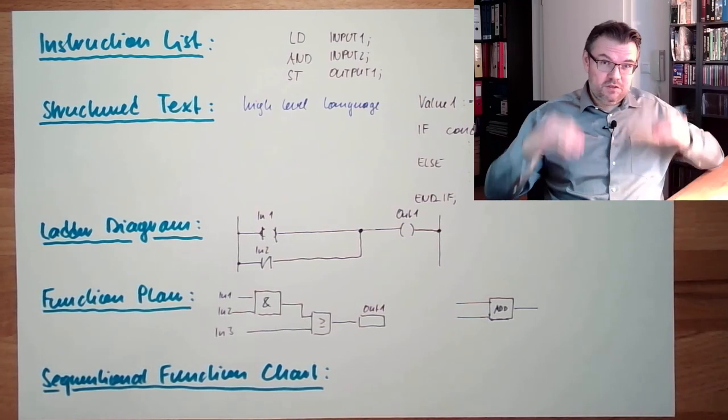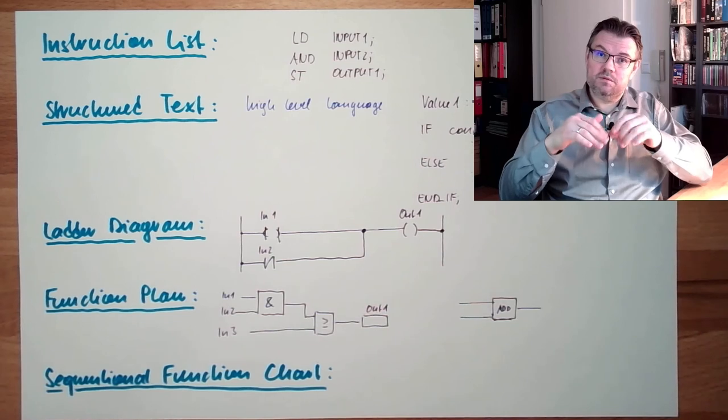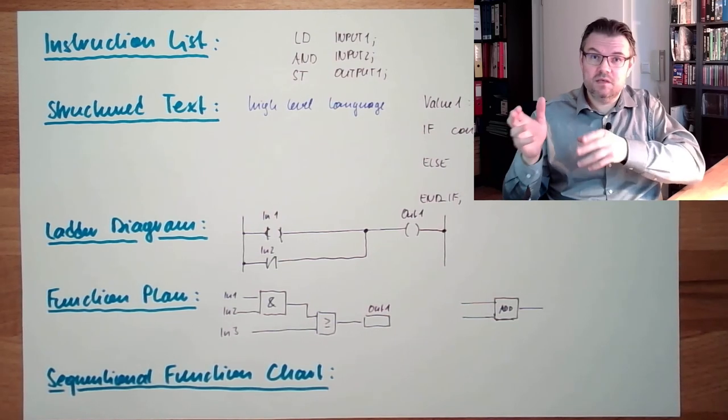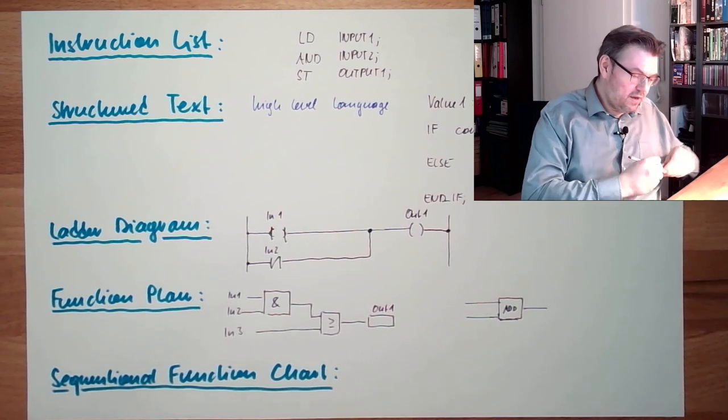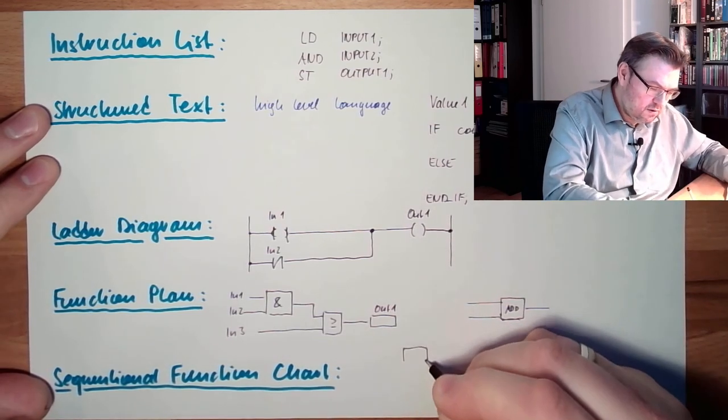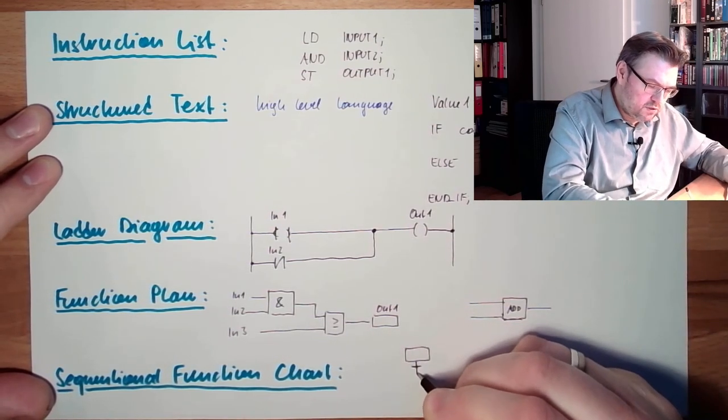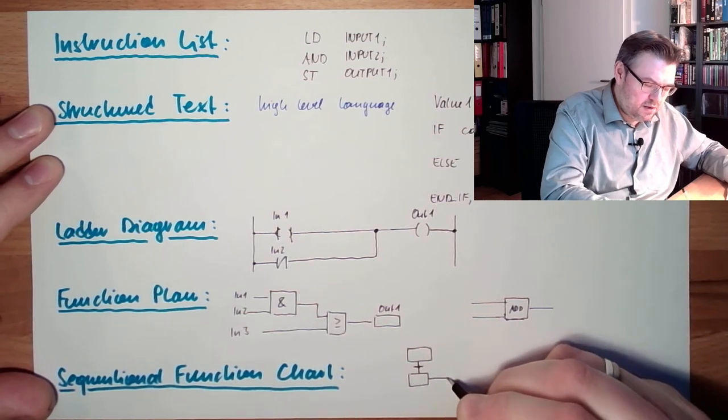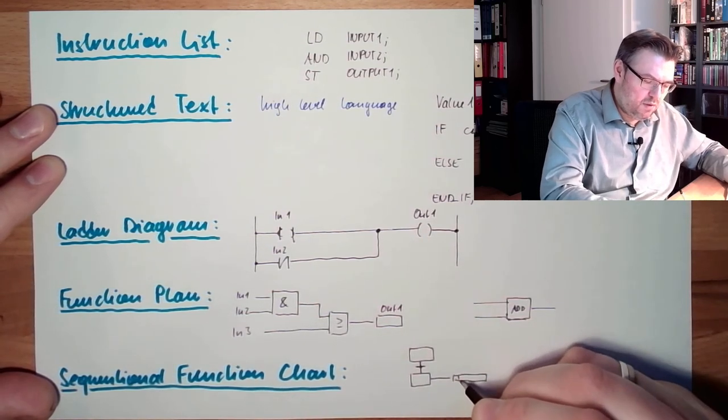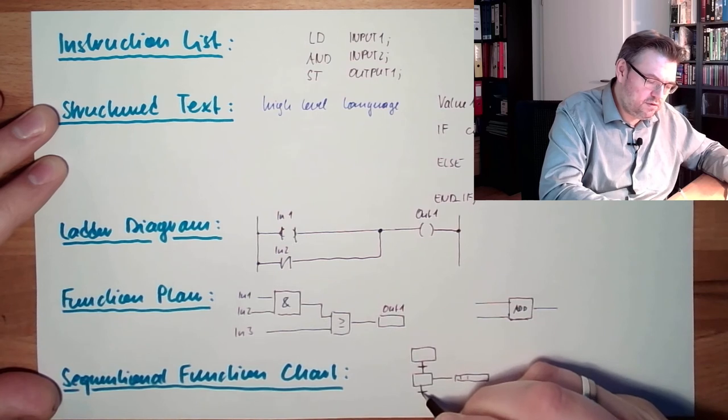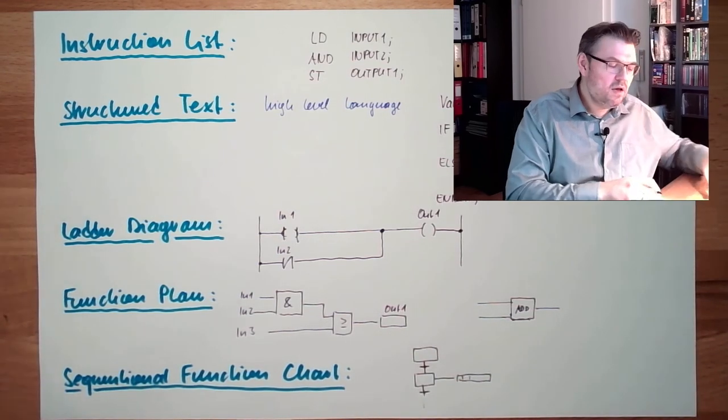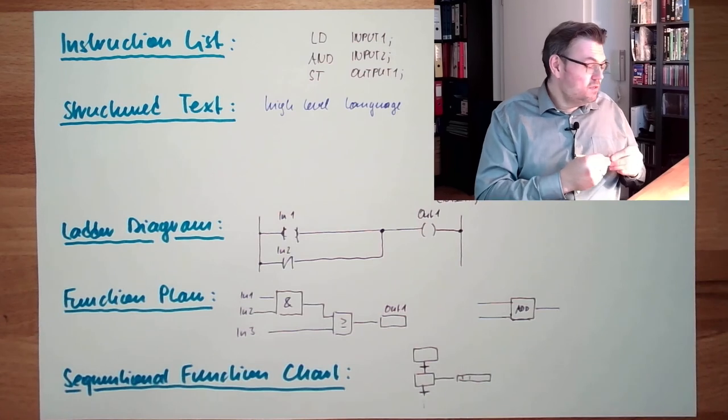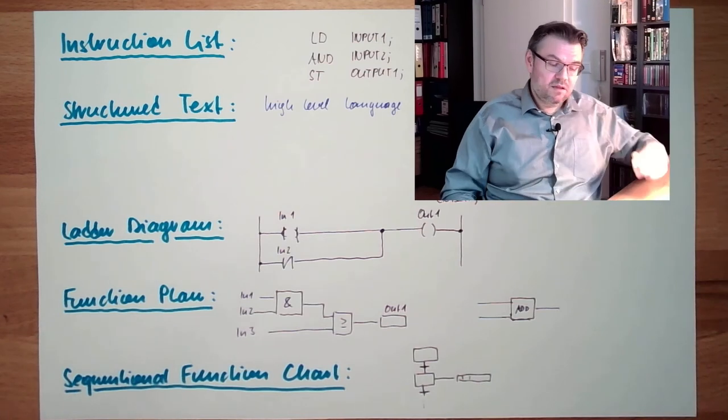Sequential Function Chart, it's pretty much like the Grafcet we've talked. So there are steps and the transition between the steps, and each step can have commands and wait times and so on. And it pretty much also looks like: there is a start, then there's a transition from start, there's a step and the step has commands and so on, there's the next transition and so on. Sequential flowchart basically looks like this Grafcet we've talked about it.